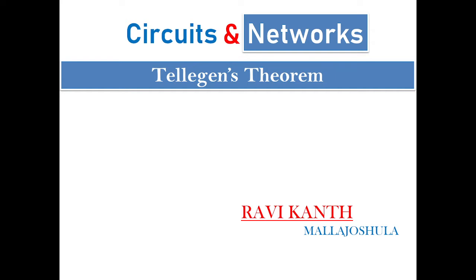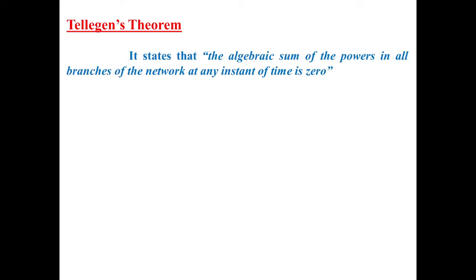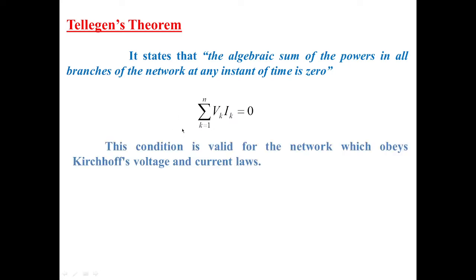What does Telegan's theorem state? It states that the algebraic sum of the powers in all branches of the network at any instant of time is zero. Mathematically it can be written as sigma V_k times I_k equals zero, where k represents the branch voltage or branch current, ranging from 1 to n. This condition is valid for networks which obey Kirchhoff's voltage law and current law.